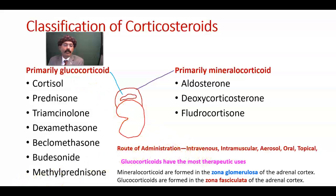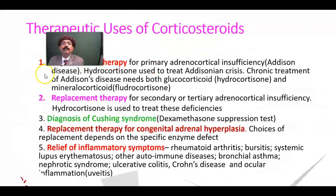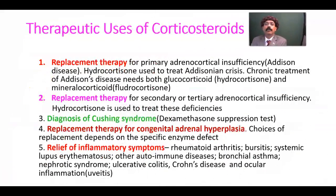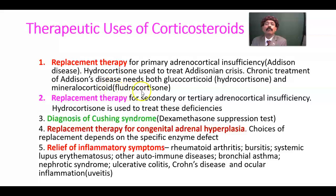Uses of corticosteroids include replacement therapy. For primary adrenocortical insufficiency, that is Addison's disease, hydrocortisone is used to treat Addisonian crisis. Chronic treatment of Addison's disease needs both a glucocorticoid — hydrocortisone — and a mineralocorticoid — fludrocortisone. Hydrocortisone is also used for secondary or tertiary adrenocortical insufficiency.